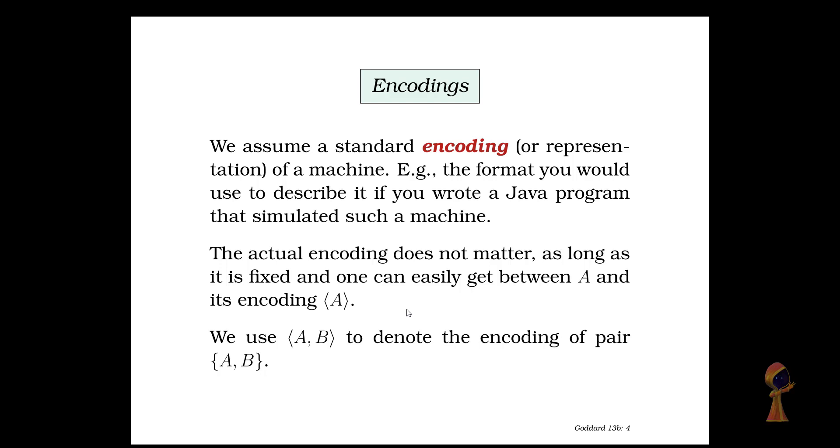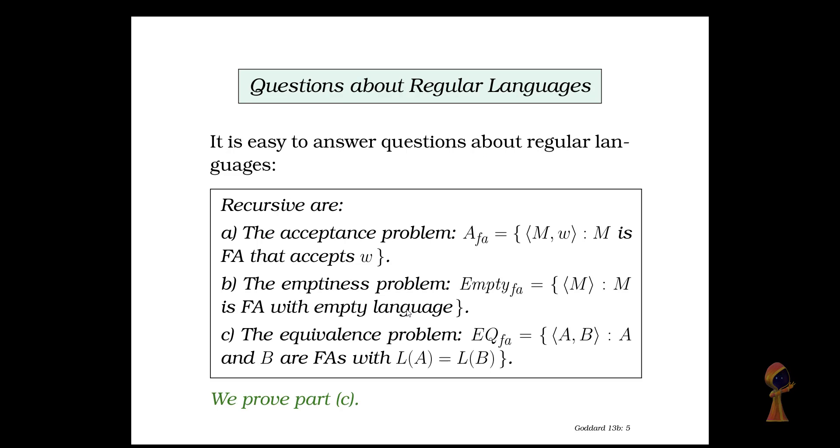Now our encoding is a standard encoding. One possibility is if we use a format like you write a Java program just like we simulate a machine. The actual encoding essentially does not matter at all as long as it's consistent. Once it's fixed and we can move from A to encoding, then it's easy to use.